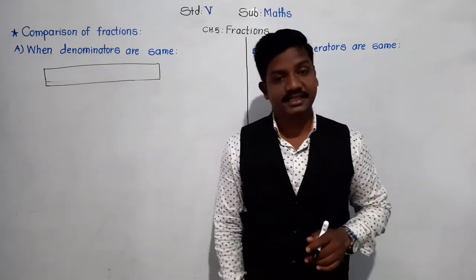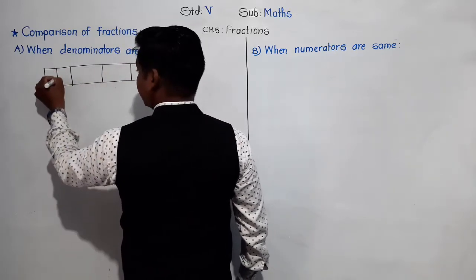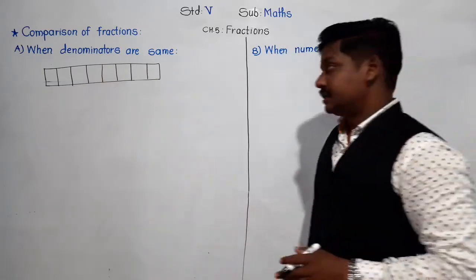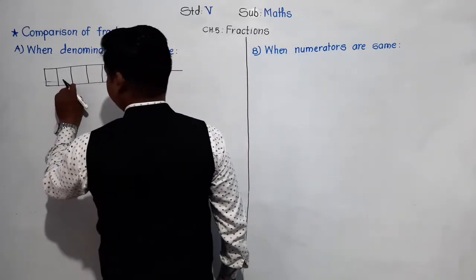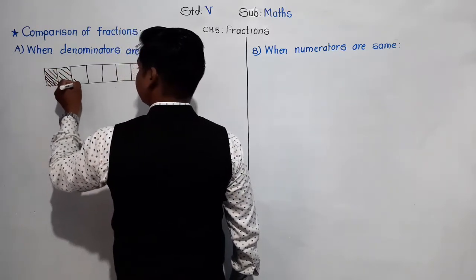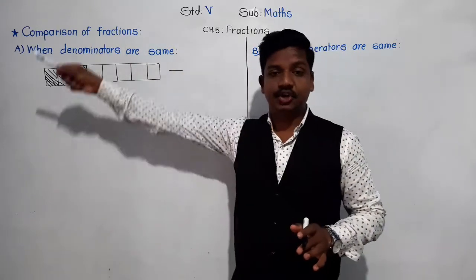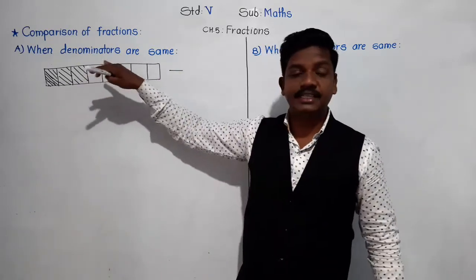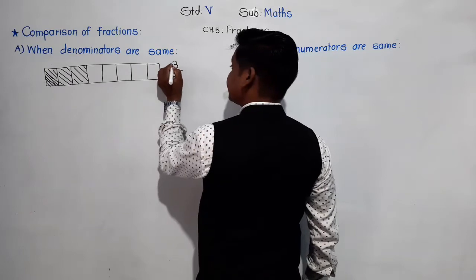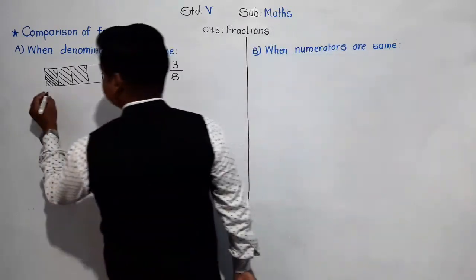Let's take one chocolate and divide it into eight equal parts. Consider these are eight equal parts. Out of these eight equal parts, three parts are shaded. The fraction for the shaded part — total eight equal parts, three are shaded — so the fraction for this chocolate is 3/8.